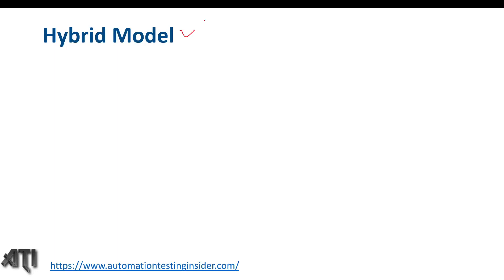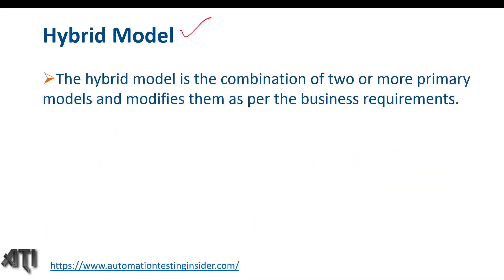Let's talk more about hybrid model. What is hybrid model? Hybrid model is the combination of two or more primary models and modifies them as per business requirements. We have primary models like waterfall model, spiral model, V&V model, and prototype model. So it is the combination of either of two primary models combined together. Basically, when we want the features of a couple of models in a single model, it's called hybrid model.